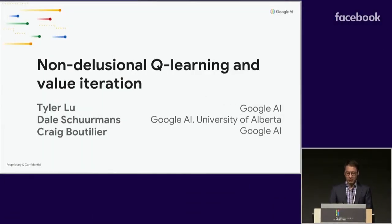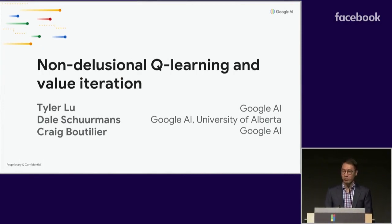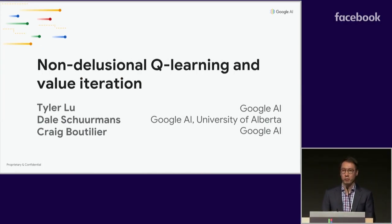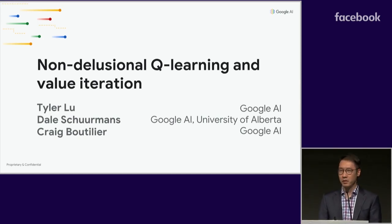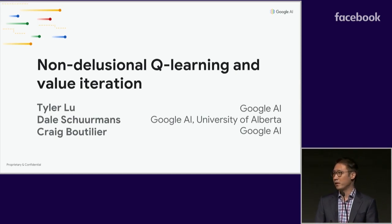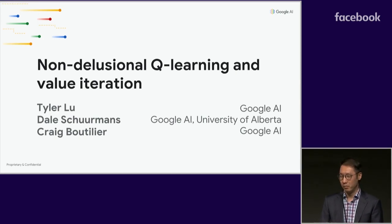Hi everyone. I'm Tyler Liu, and today I'll be talking about a new phenomenon which arises in value-based reinforcement learning with function approximation. We call it delusional bias, and it can cause some significant problems for value-based RL. We'll also outline some new algorithms and analysis we've developed to tackle this problem.